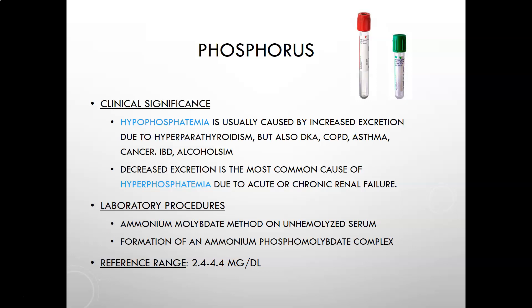Decreased excretion is the most common cause of hyperphosphatemia, due to acute or chronic renal failure. The laboratory procedure uses the ammonium molybdate method on unhemolyzed serum, where an ammonium phosphomolybdate complex is formed and measured, proportional to the amount of phosphate. The reference range is 2.4 to 4.4 mg/dL. Thank you for your attention.